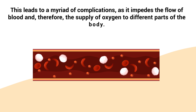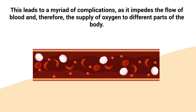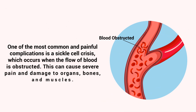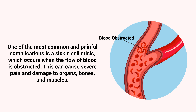This leads to a myriad of complications as it impedes the flow of blood and, therefore, the supply of oxygen to different parts of the body. One of the most common and painful complications is a sickle cell crisis, which occurs when the flow of blood is obstructed. This can cause severe pain and damage to organs, bones, and muscles.